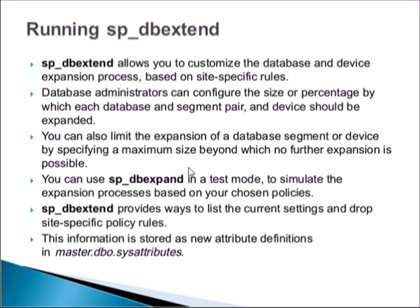You can limit the expansion of a database segment or device by specifying the maximum size beyond which no further expansion is possible. For example, if you have 50 MB space left out of 100 MB total, you can say it should grow by 5 MB or 5-10 percent each time and cannot go beyond 100 MB. That is a quota — you can put a hard limit or maximum limit beyond which even the expansion will not work.